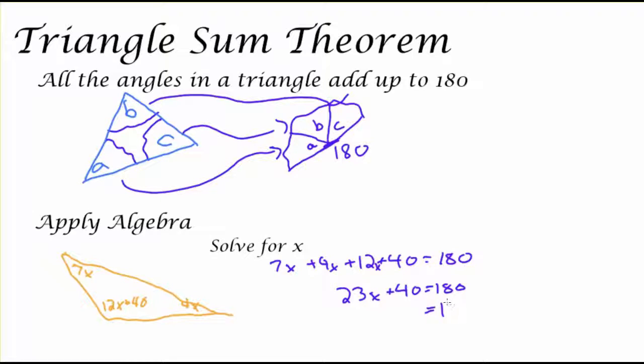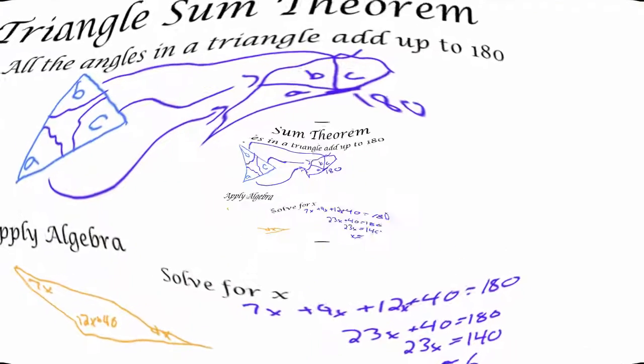Subtract 40 from both sides giving me 140 on the right. Keeping the 23x on the left side. And then dividing 140 by 23. Which will give me about 6. It's not exactly 6, but it's very close to 6.